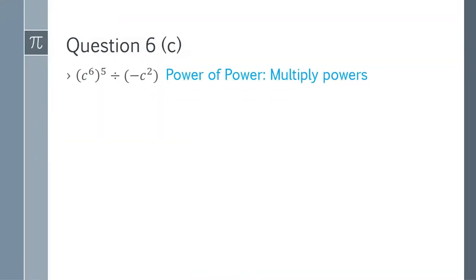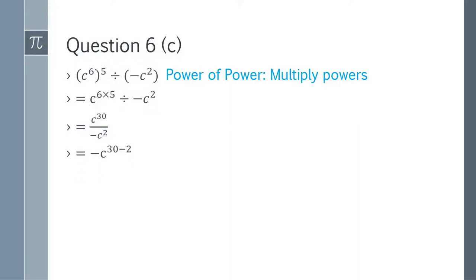Question 6c: (c^6)^5 divided by (-c^2). Expand: c^(6×5) = c^30. Write in fraction form with -c^2 as denominator. The minus stays as -1. Subtract powers: c^(30-2) = -c^28. That is the answer.